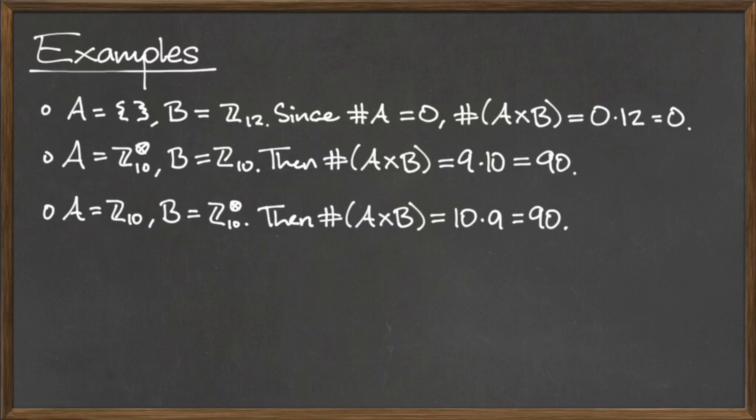The third example uses the same two sets as the second example with the order switched. However, since multiplication is commutative, the cardinality of the cross product with the sets switched will still be 90.